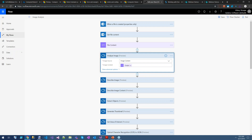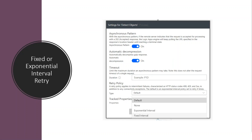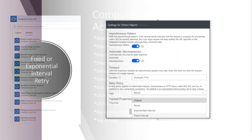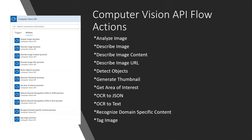Here's what's available to us: Analyze Image, Describe Image, Describe Image Content, Describe Image URL — these three are very similar. We've also got Detect Objects, Generate Thumbnail, Get Area of Interest, OCR, Recognize Domain Specific Content, and Image Tagging.